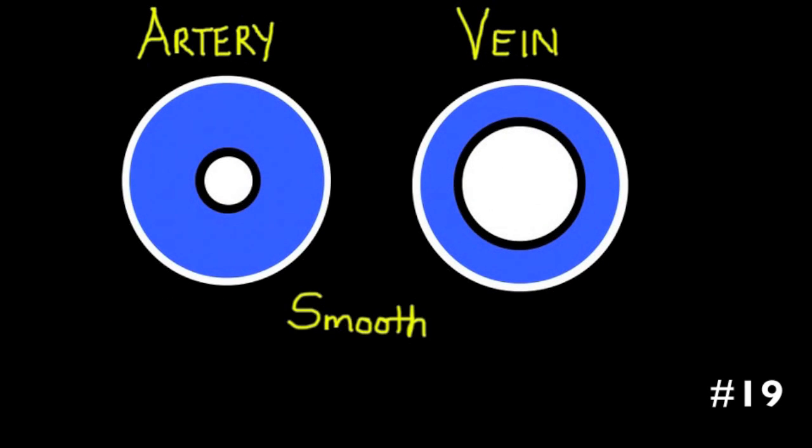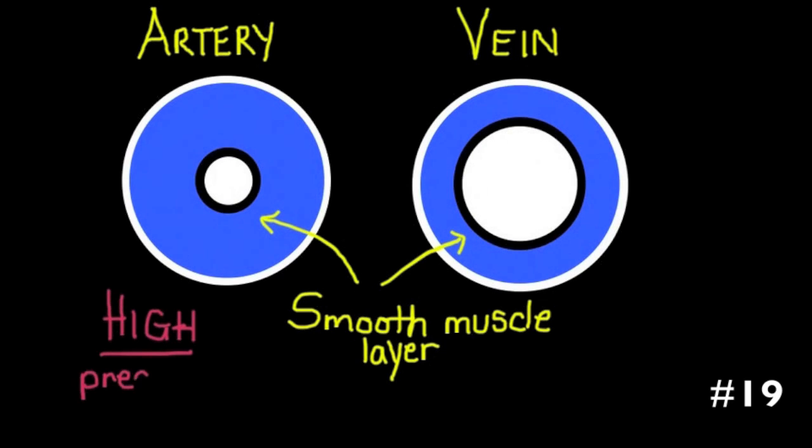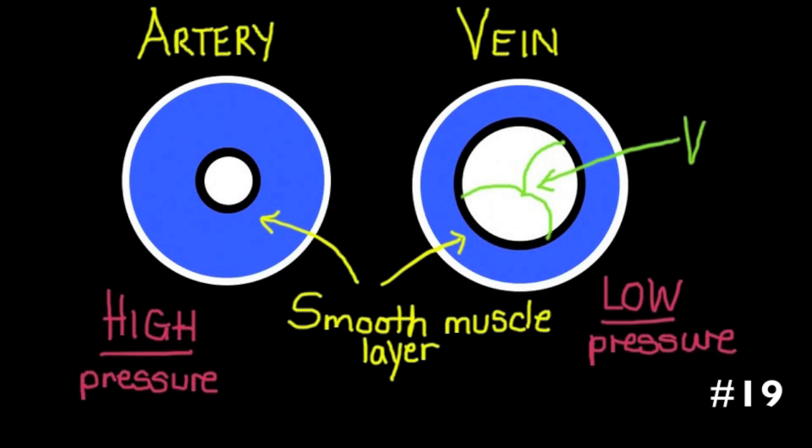When discussing and relating the structure and function of arteries and veins, students often fail to mention the pressure that the blood is under. So in the artery, you have a thick smooth muscle layer because the blood is under high pressure and the vessel needs to be able to undergo that elastic recoil when the blood passes through at high pressure. In contrast, in the vein, the blood is at low pressure, so the smooth muscle layer is thinner than in the artery. Remember also that it's only the veins that have valves. Students also rarely mention that veins are situated in muscles so that when the muscle contracts, the blood is squeezed and pushed through the vein.